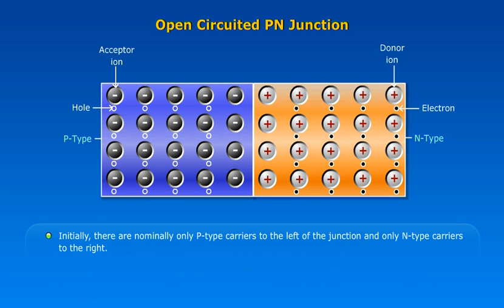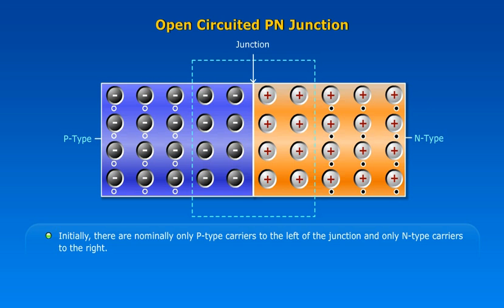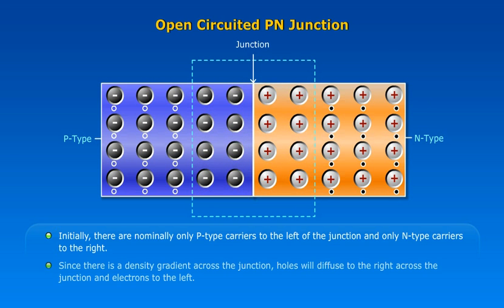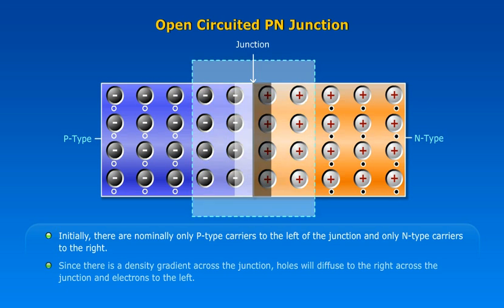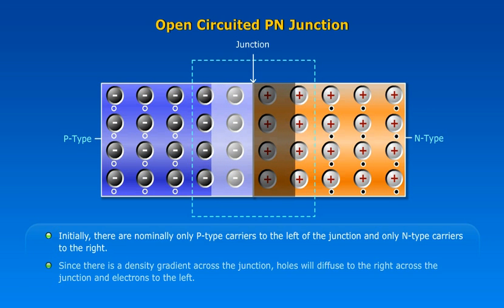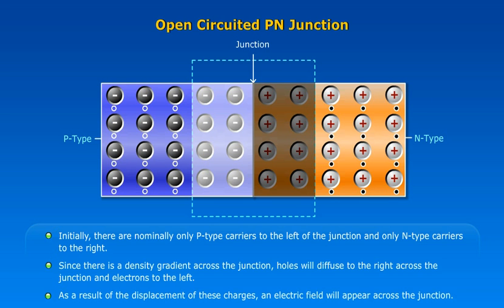Initially, there are nominally only P-type carriers to the left of the junction and only N-type carriers to the right. Since there is a density gradient across the junction, holes will diffuse to the right across the junction and electrons to the left. As a result of the displacement of these charges, an electric field will appear across the junction.